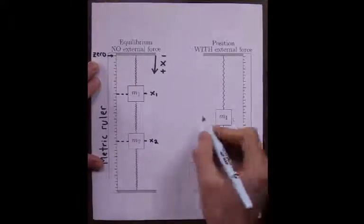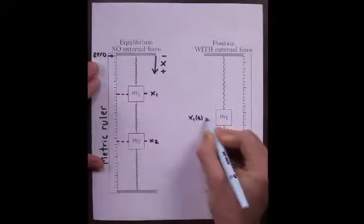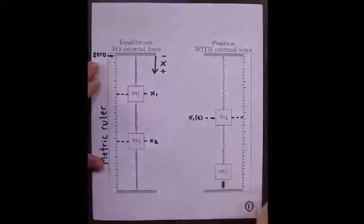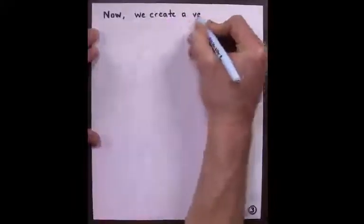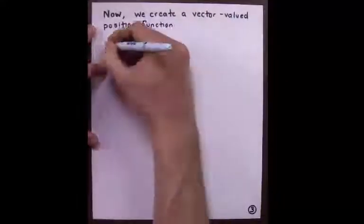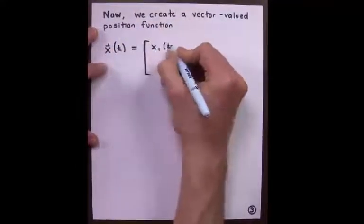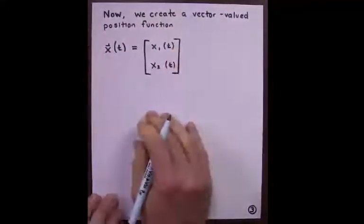Here, we see that the masses move, so we mark the center of mass one at time t as x1 of t, the center of mass two at time t at x2. Let's create a vector-valued position function, we'll call it x of t, given by x1 of t, x2 of t.